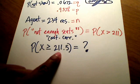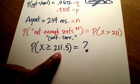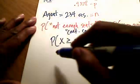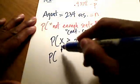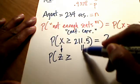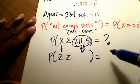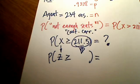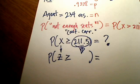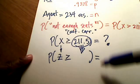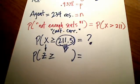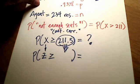I cannot look up 211.5 in a normal table — it just doesn't exist. So I need to change this x into a z number that I can look up on a table. But before I proceed with all this work, this might actually be useless — I may not be able to use a normal to approximate a binomial if two conditions are not satisfied.